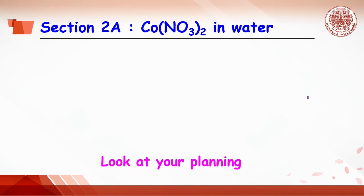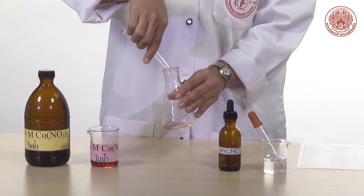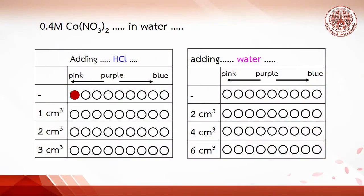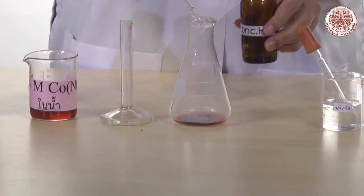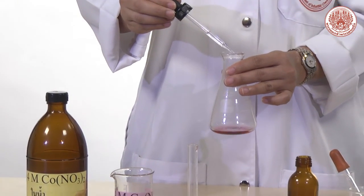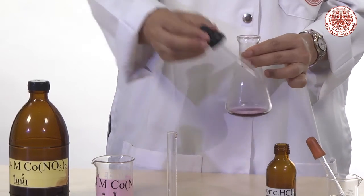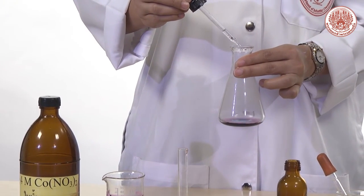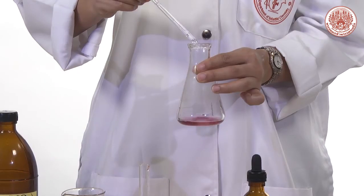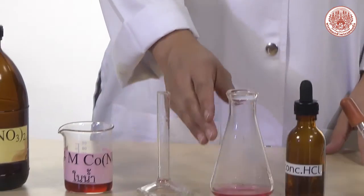So on Section 2A, 2.5 ml of cobalt ion in water is dropped in the aluminum flask. 20 drops of hydrochloric acid is added. Record the solution color. Then add another 20 drops and record the color. The hydrochloric acid is added till solution turns blue. Then take the blue solution and add water for 2 ml each till pink color appears.